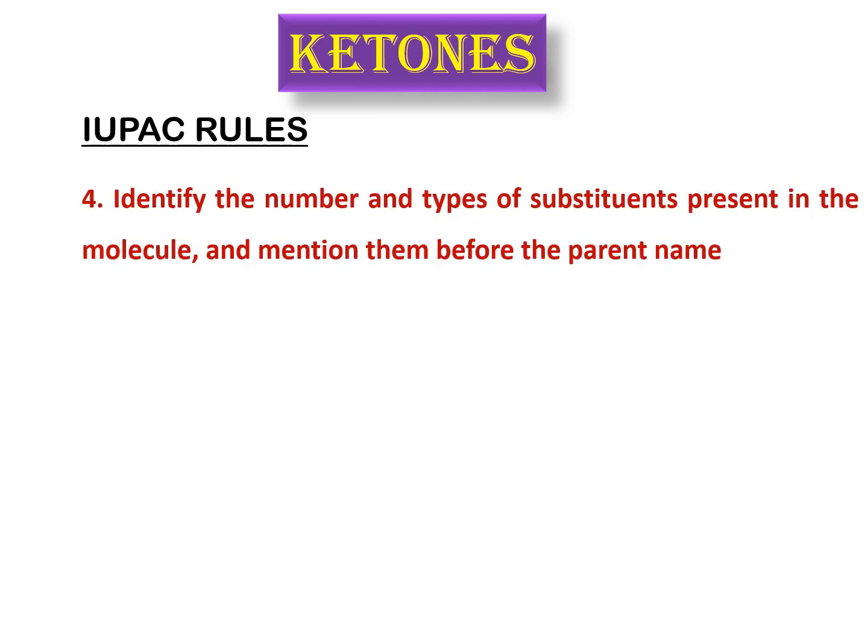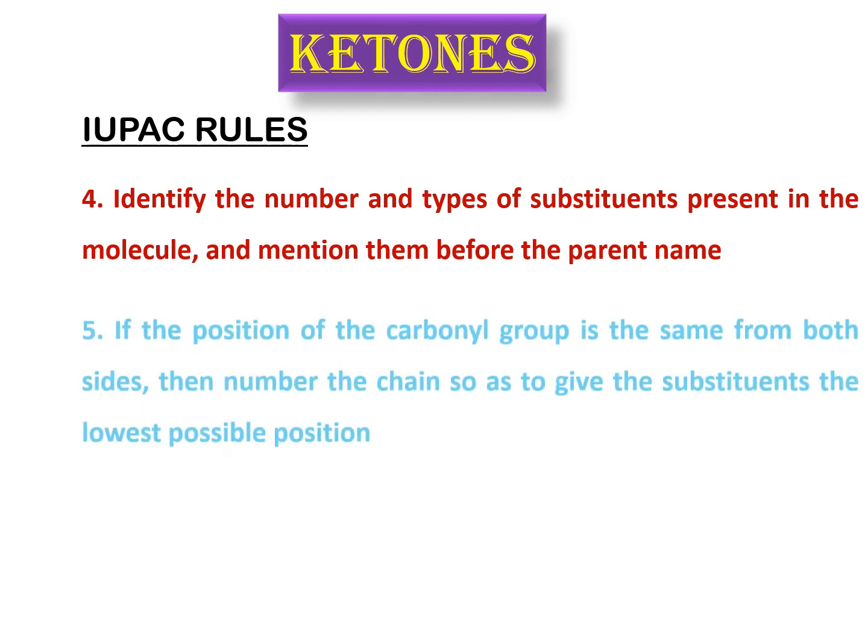If there are substituents present on the main chain, then you have to identify the number and types of all the substituents present on this chain, and you have to mention them before the parent name while writing the IUPAC name for a particular molecule.